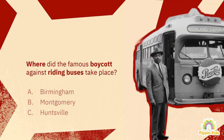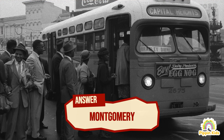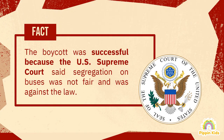Question number four: where did the famous boycott against riding buses take place? A) Birmingham. B) Montgomery. C) Huntsville. The answer is B, Montgomery. The boycott was successful because the US Supreme Court said segregation on buses was not fair and was against the law — a big win for the civil rights movement ensuring everyone was treated equally regardless of skin color.